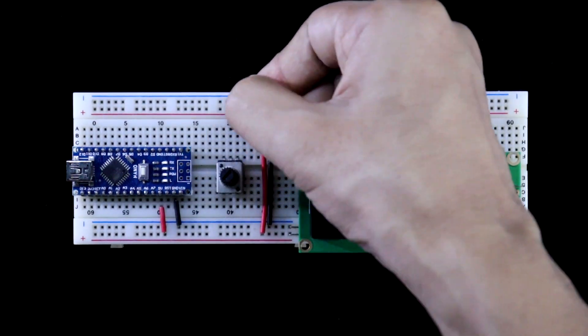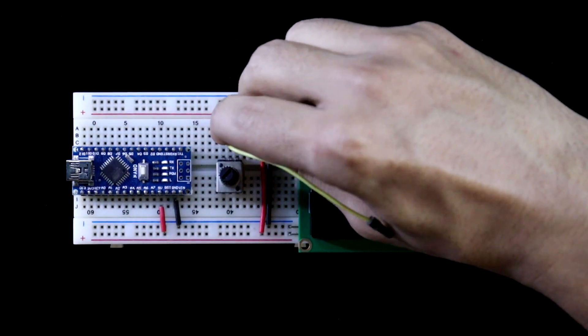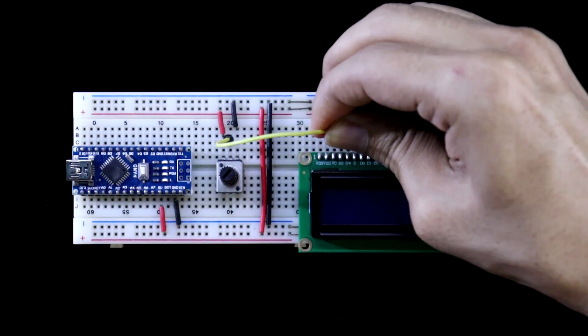Both the ends of potentiometer is connected to positive and negative rails. And middle pin of the potentiometer is connected to V0 pin of display.